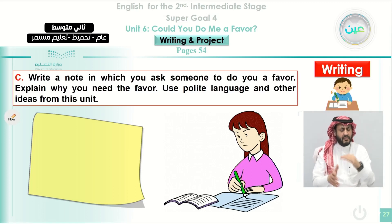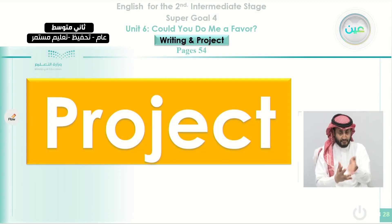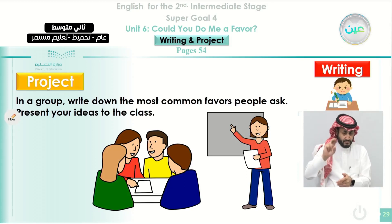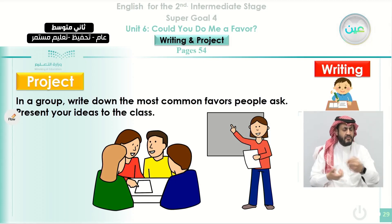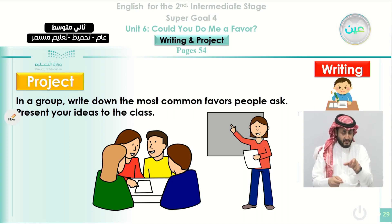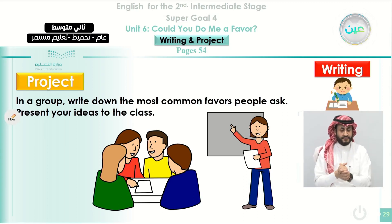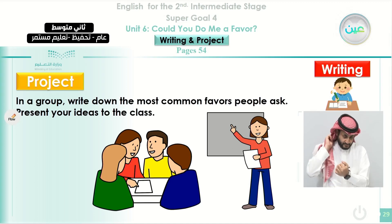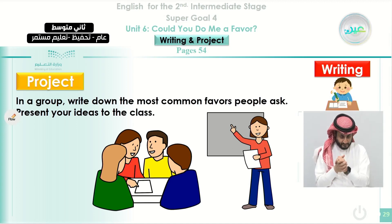Now we move to the second section of our class today, which is about a project. In this project, you need to work with a group — your classmates or members of your family — and write down the most common favors people ask. Usually you are asking people to help you or you are asked to help others. Think about what these favors are, make a list with your classmates or family, and present your ideas to the class. In the next class, we will discuss what the usual favors are that people were asking.